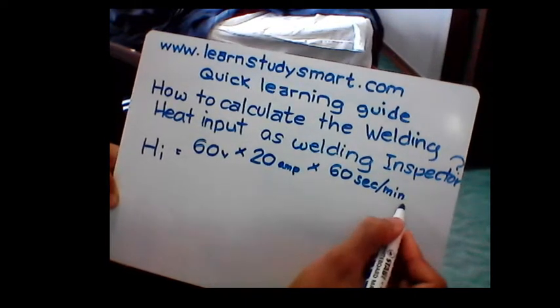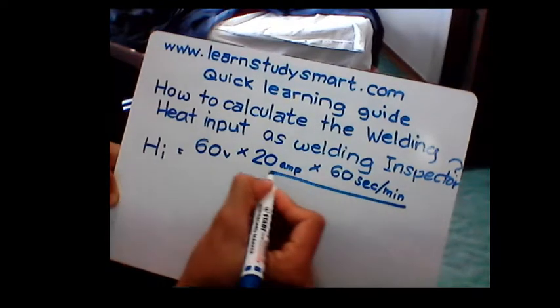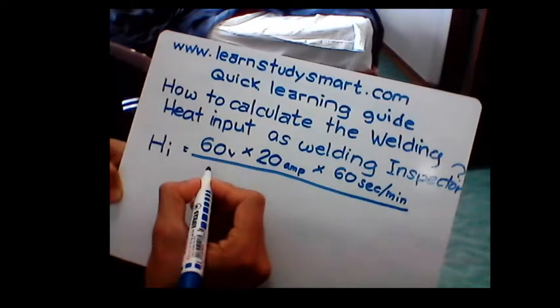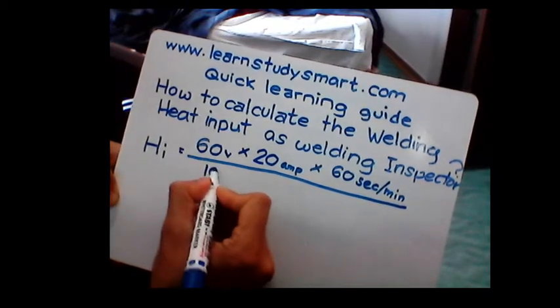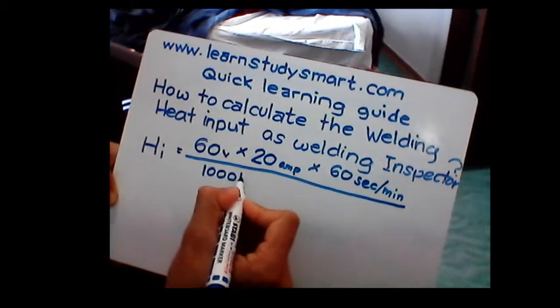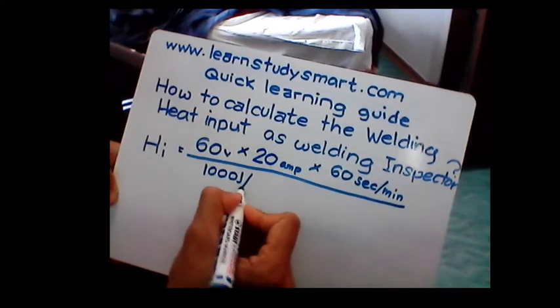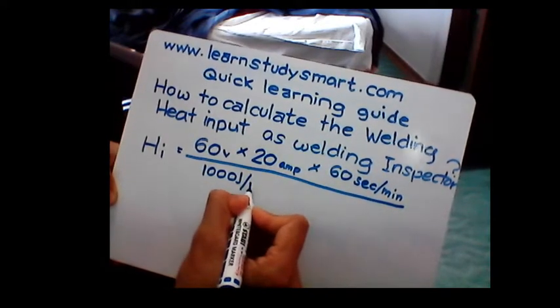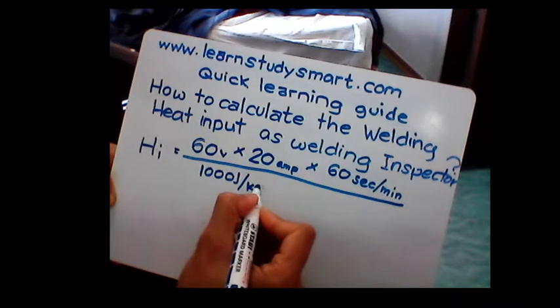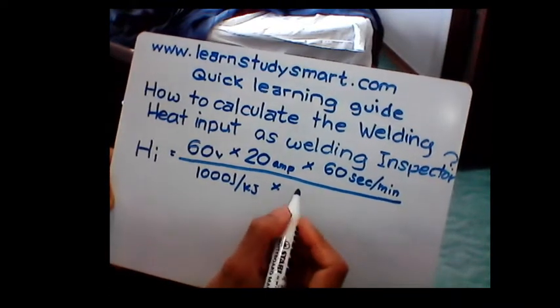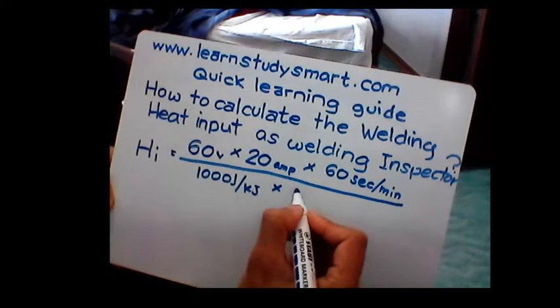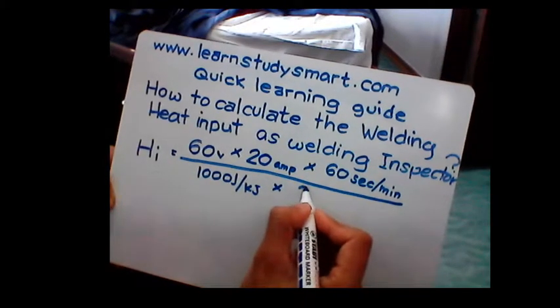Then you have one thousand joule per kilojoule multiplied by the travel speed. The travel speed is equivalent to...